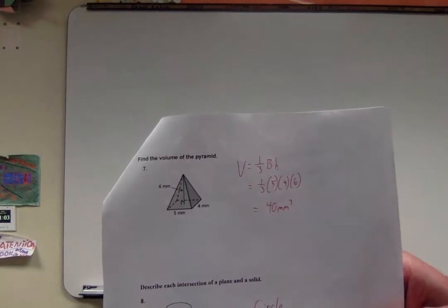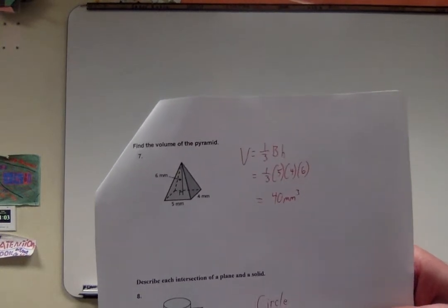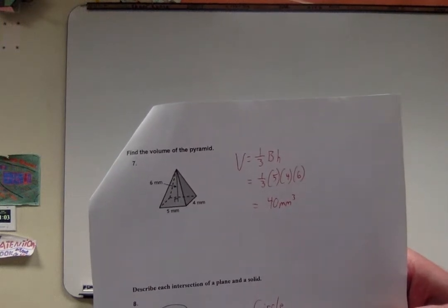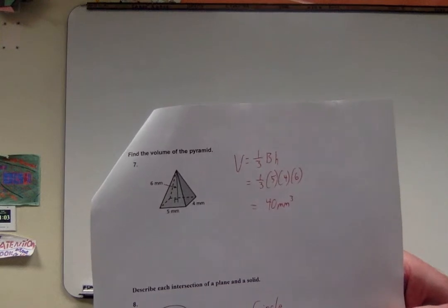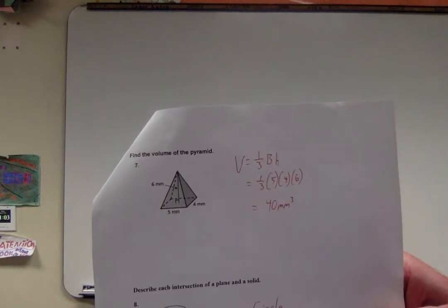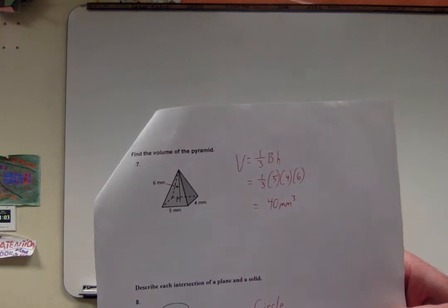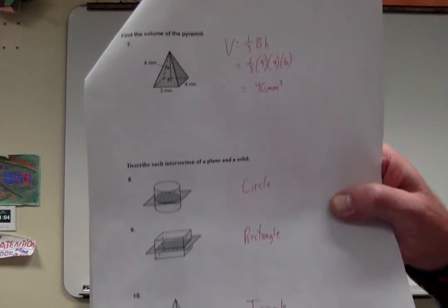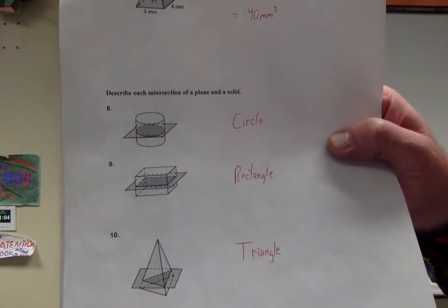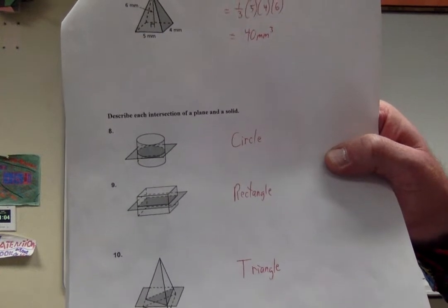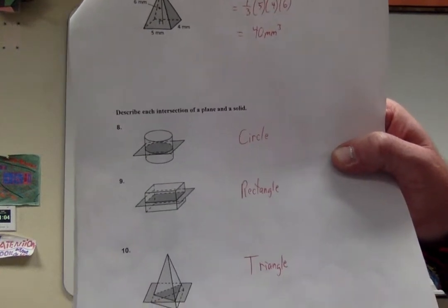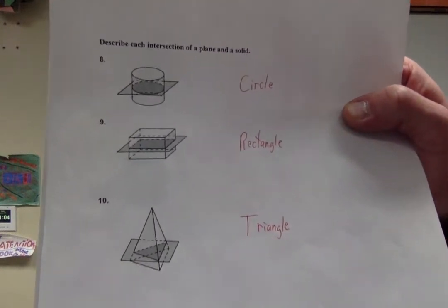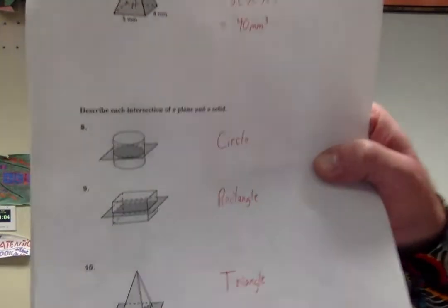Moving right along, number 7, everybody. The volume of a pyramid is 1 third the area of the base, there's that capital B again, times the height. Well, it's a rectangle down there, so it would be length times width to find the area of that base. So 1 third times that 5 times 4 times the height, which is 6, gives me 40 millimeters cubed. And our easiest questions, maybe of the whole year, what two-dimensional shape do you get when you cut these planes? Number 8, I hope you obviously recognize that circle. Number 9 is a rectangle, and number 10 was a triangle. Okay, everybody, there we go. So now let's get to our new chapter, chapter 10, volume and similar solids.